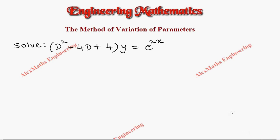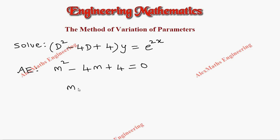Hi students, this is Alex. In this video we are going to solve the problem using the method of variation of parameters. As a first step we have to write the auxiliary equation, which is m squared minus 4m plus 4 equal to 0. This can be written as (m minus 2) whole square equal to 0.